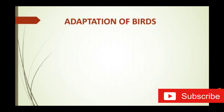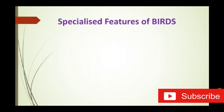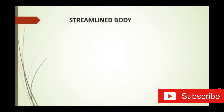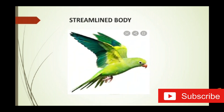Next we learn about adaptation of birds. Birds also have strong chest muscles. First, streamlined body — just like fish, birds also contain a streamlined body, and that body is fully covered with feathers.